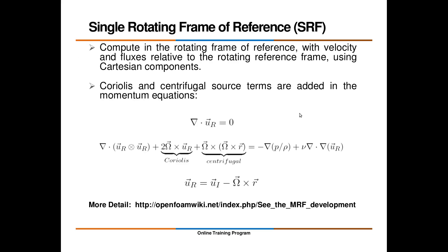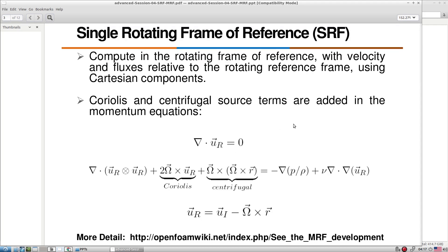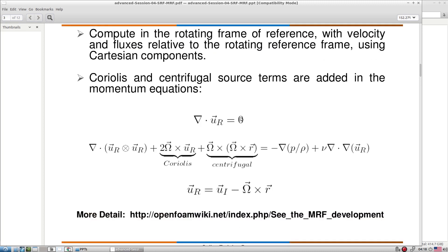For Single Rotating Frame of Reference, we need to add certain terms — Coriolis forces and centrifugal forces — inside the Navier-Stokes equations. The SRF approach computes everything in the rotating frame of reference, where the coordinate system sits on the impeller and rotates with it, using a Cartesian coordinate system.